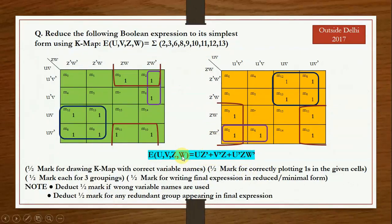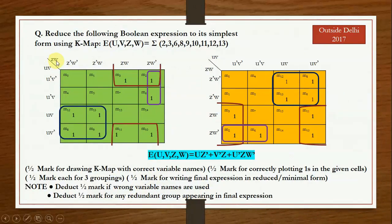Marking scheme: half mark for drawing the KMAP with correct variable names — very important, use U, V, W, Z not A, B, C, D or other names. Half mark for plotting ones correctly. Half mark for each of the three correct groupings. Half mark for writing the final reduced expression. Half mark will be deducted for wrong variable names, and half mark deducted for any redundant group.